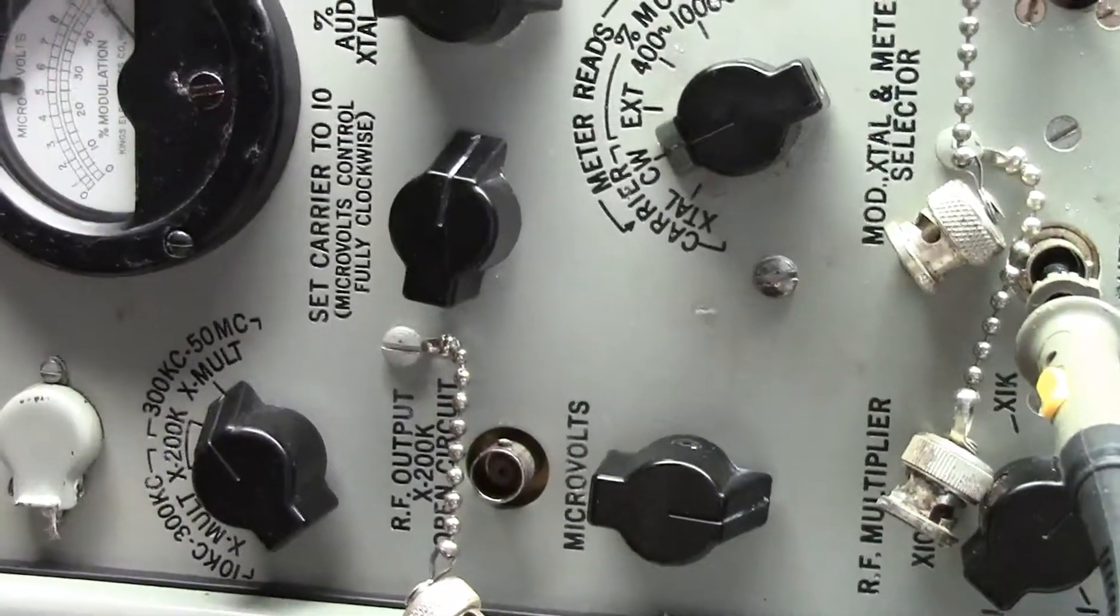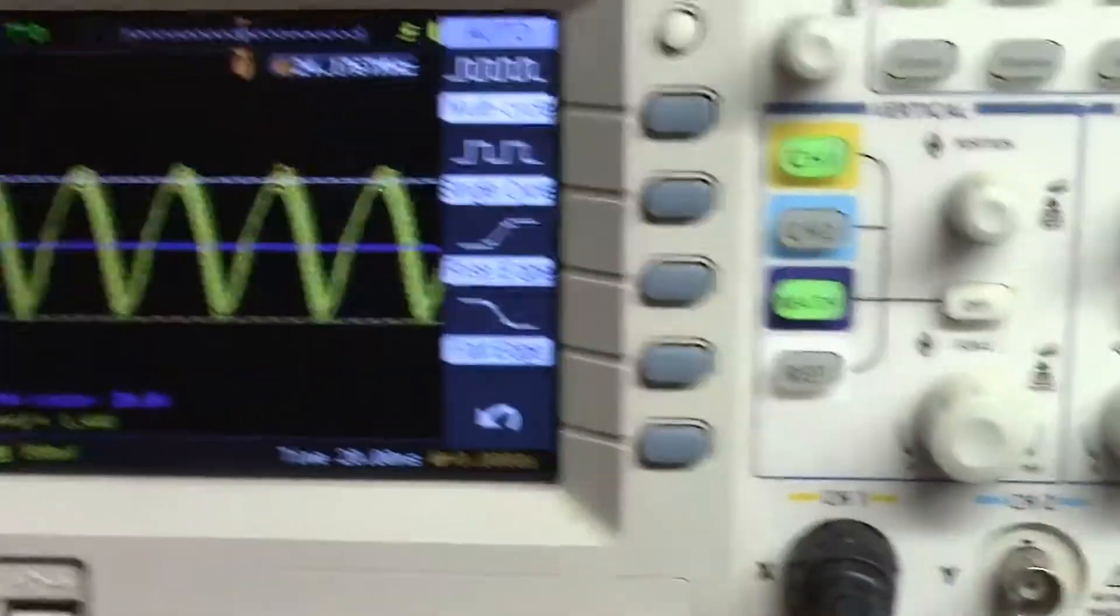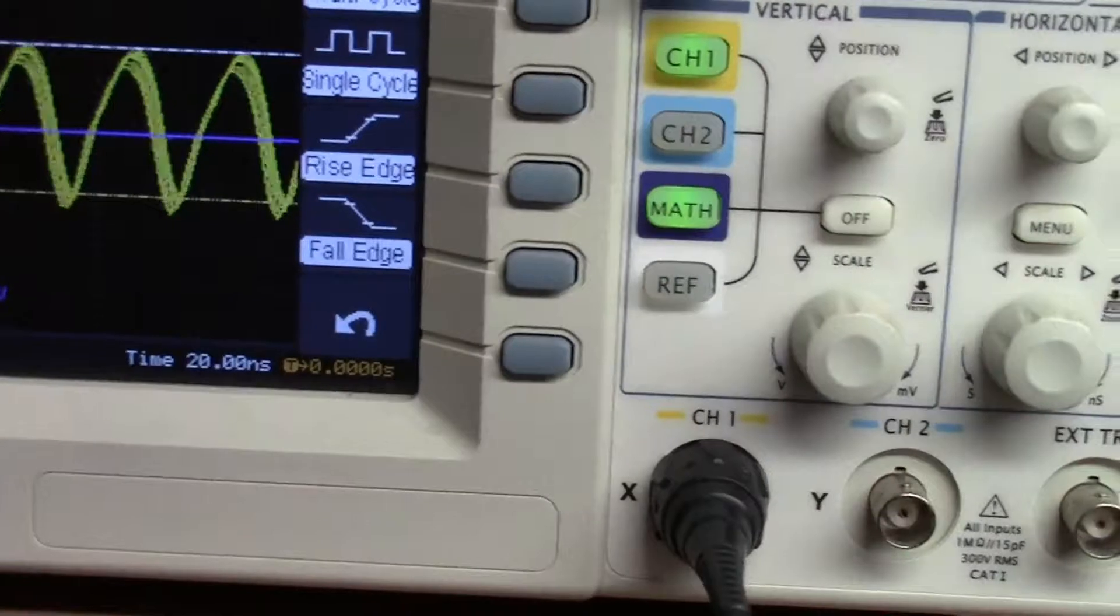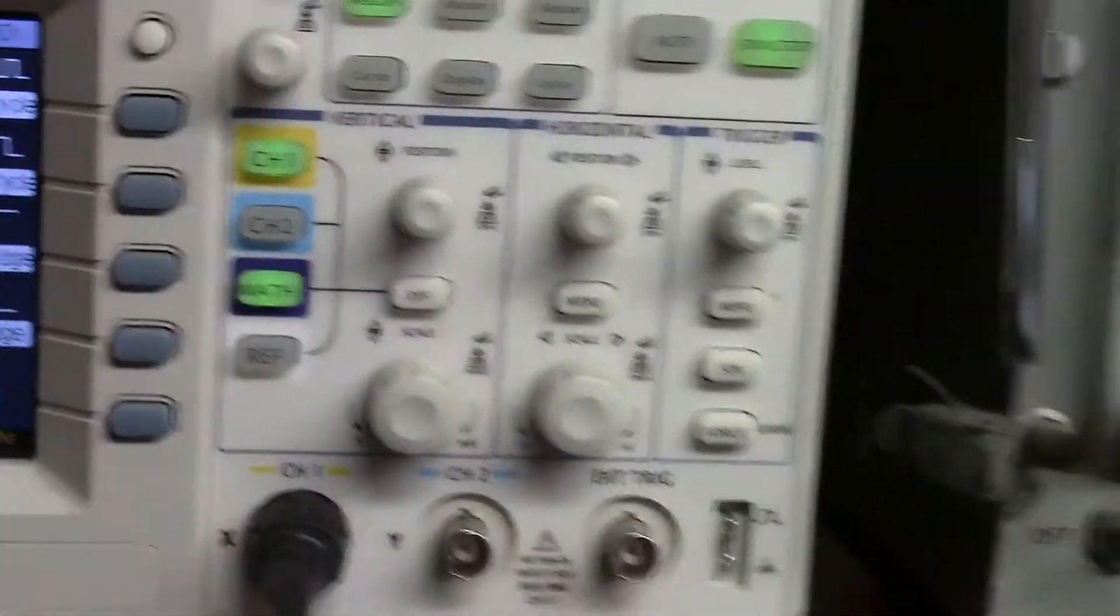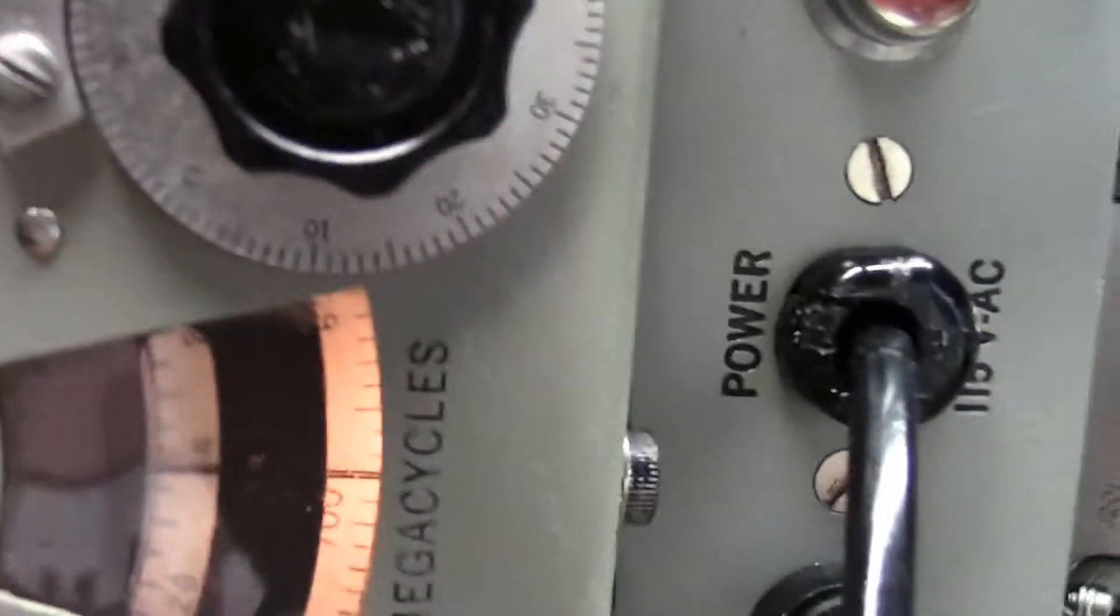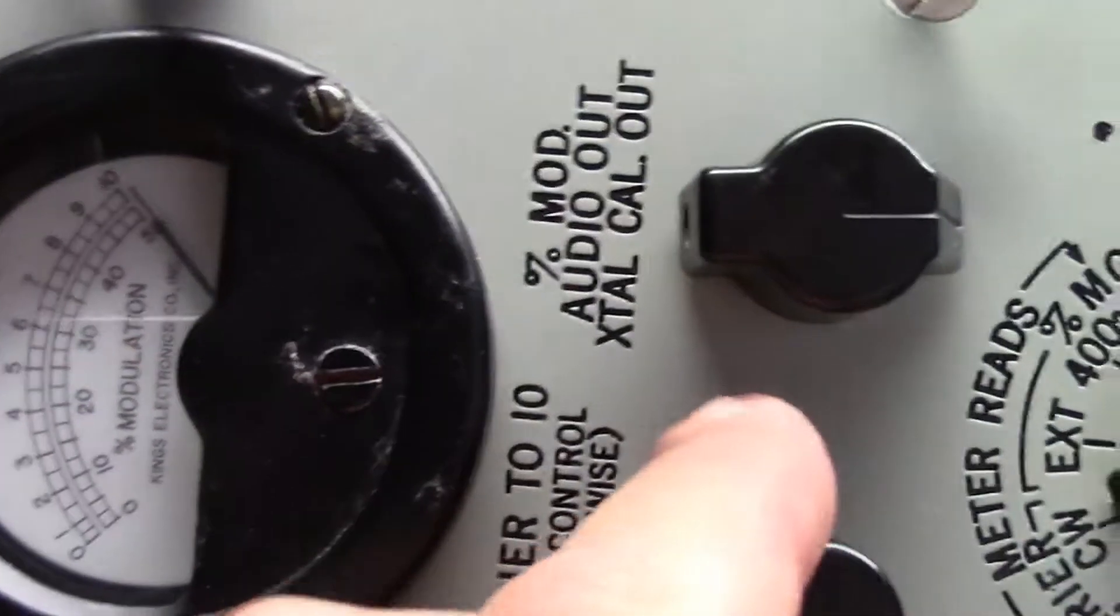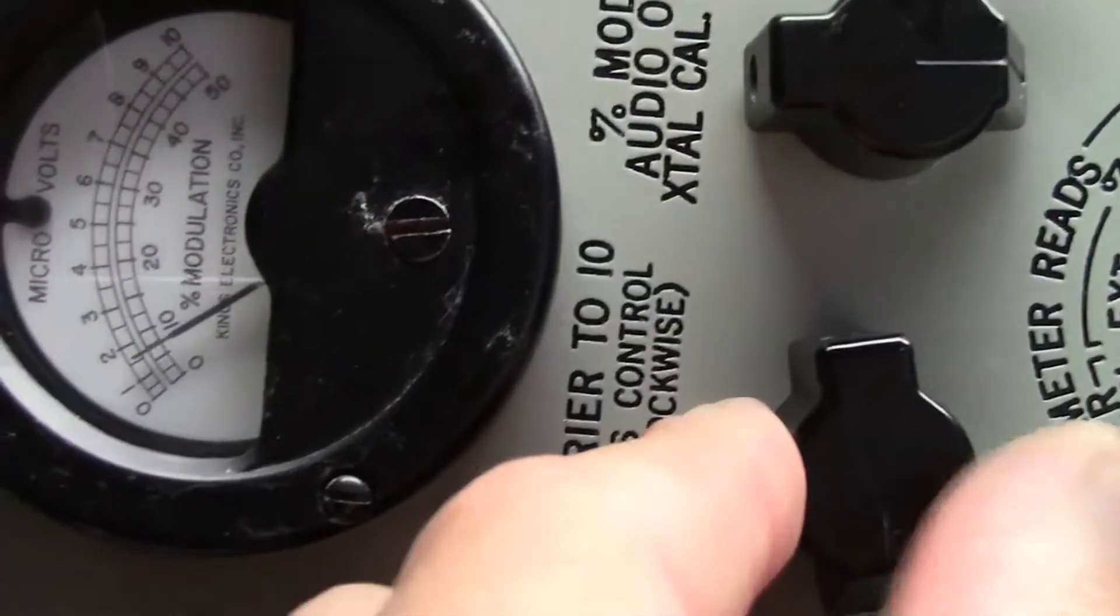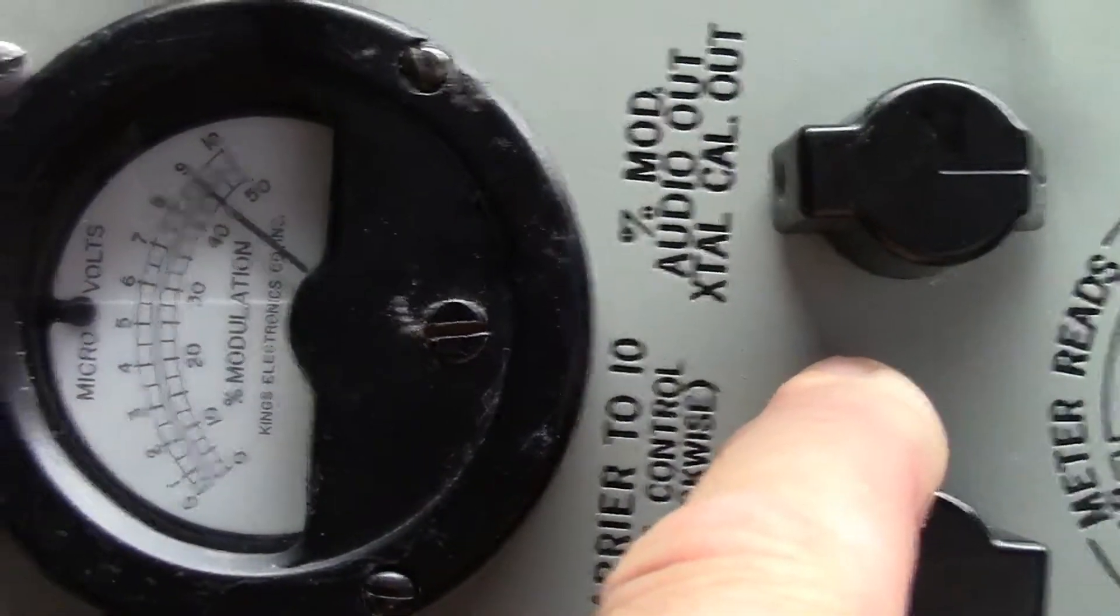And, we're back. As you can see from the scope, we've got an output. How nice is that? And, it's at 24.1764 megahertz. And, that's fairly close to where it is on the dial. And, as you can see, now the meter is adjustable. You can adjust the output. And, everything is working as it should be.